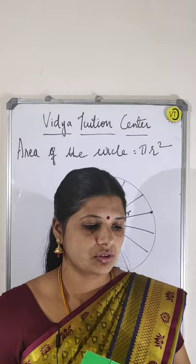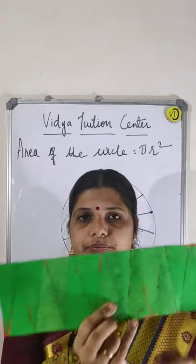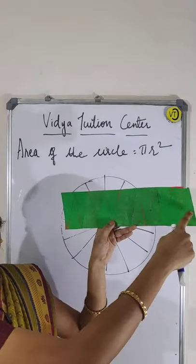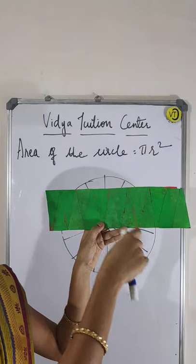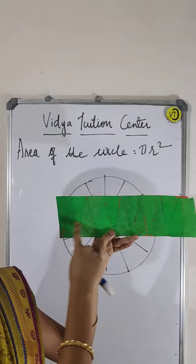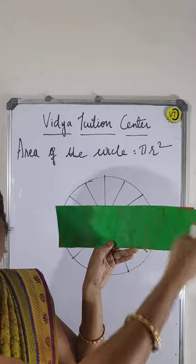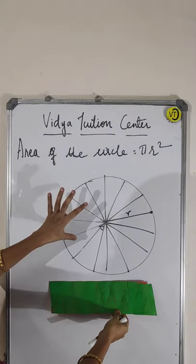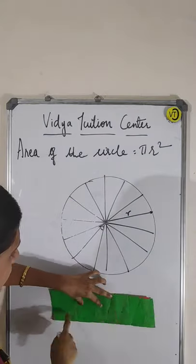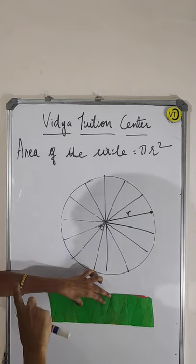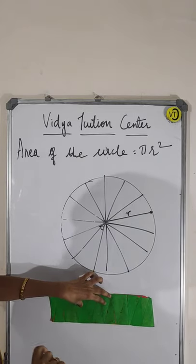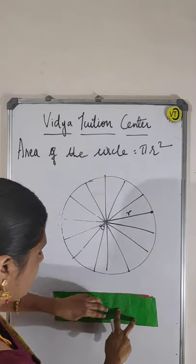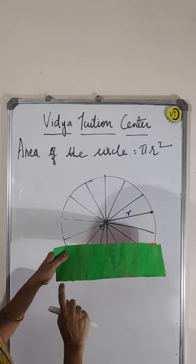So all the pieces you are getting after cutting, you are going to arrange like this — this way and this way. So I have arranged like that. This is the case here. Like this I have arranged, I stuck them on the paper because they will not fly off — I stuck them on the chart. Now you see: the same circle I have cut and I made it like a parallelogram.